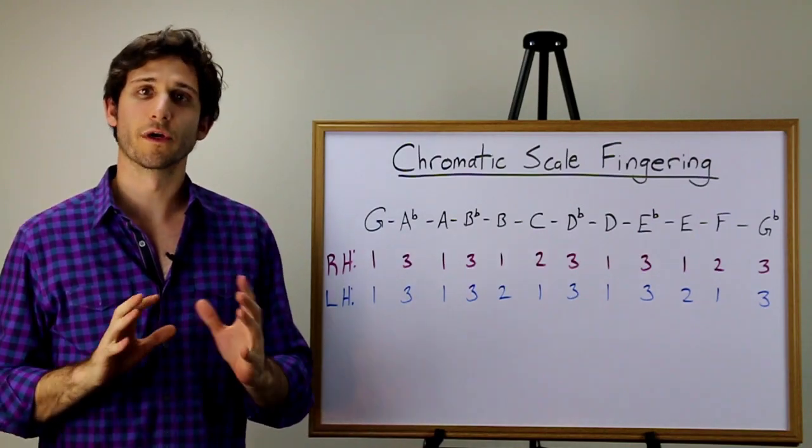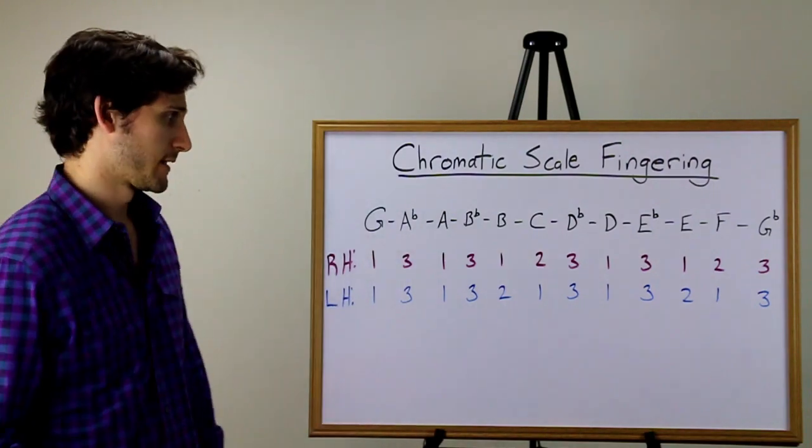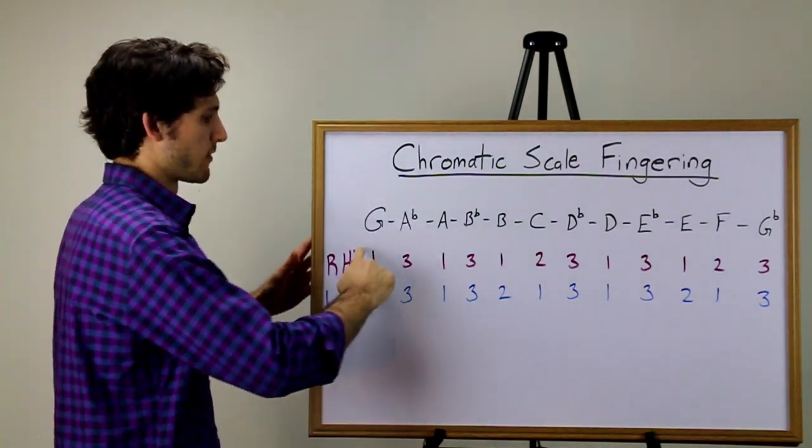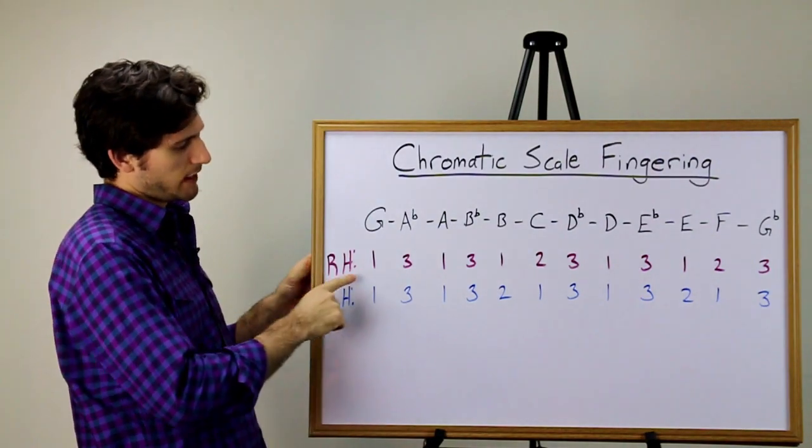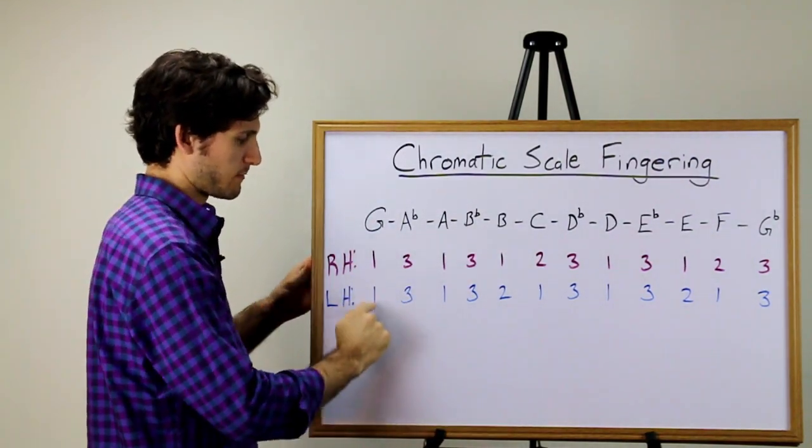Sometimes if I'm working on how to coordinate my hands to play a scale together, I found it very useful to draw a grid kind of like this. Here I have all the notes in the chromatic scale, and I have my right hand fingers that correspond to each note, and my left hand fingers that correspond to each note.